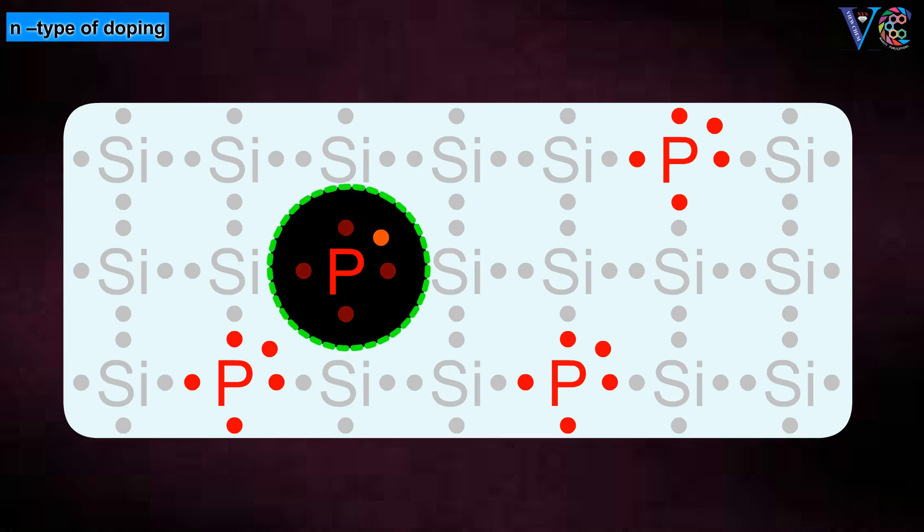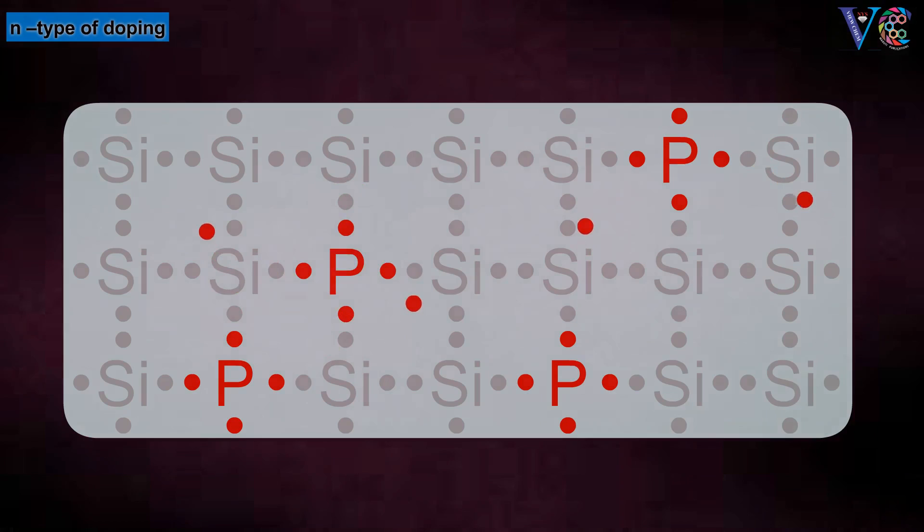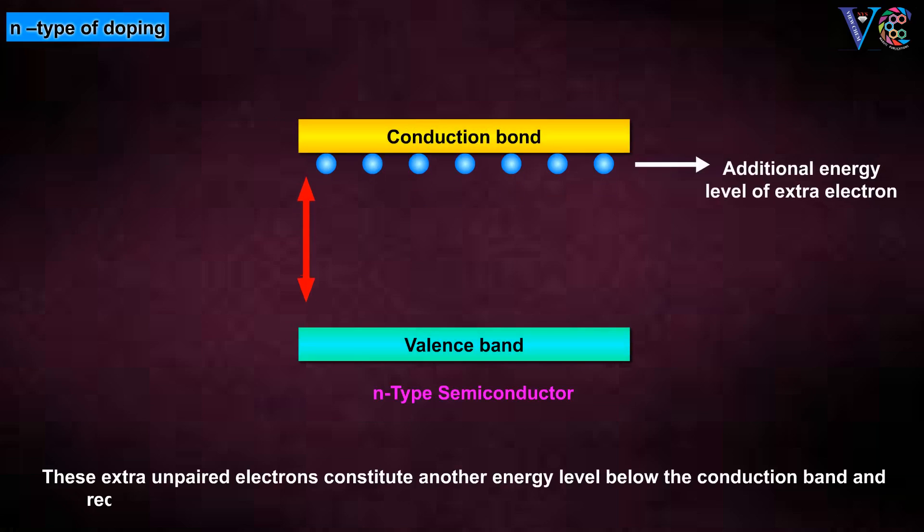So, one electron of phosphorus is not involved in the bonding with silicon and moves freely. These extra unpaired electrons constitute another energy level below the conduction band and reduce the forbidden gap. Thus, the process of conduction becomes relatively easier.